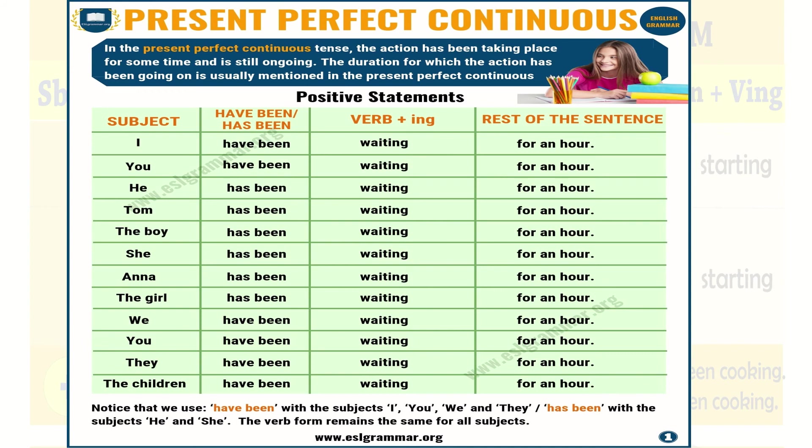For example: 'I have been waiting for an hour.' 'He has been waiting for five days.' 'She has been eating for two hours.' 'The children have been waiting for their summer vacations.' In each of these, the time period — the duration for which the action has been going on — is mentioned.